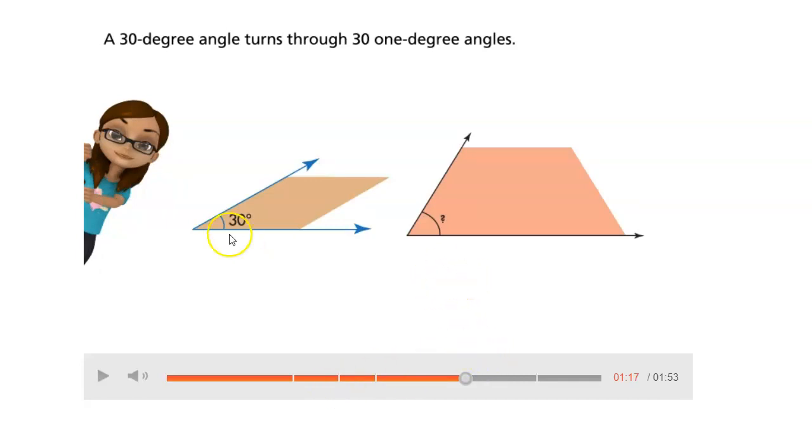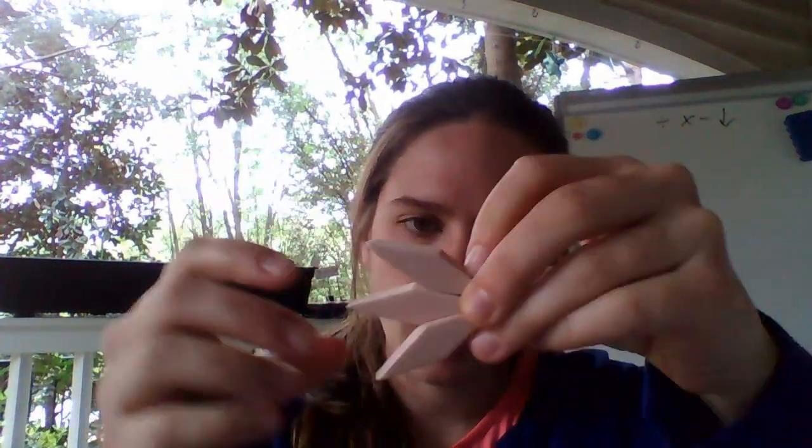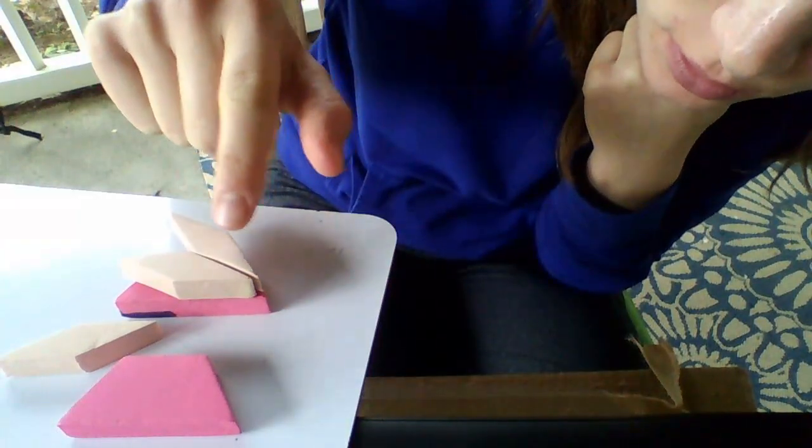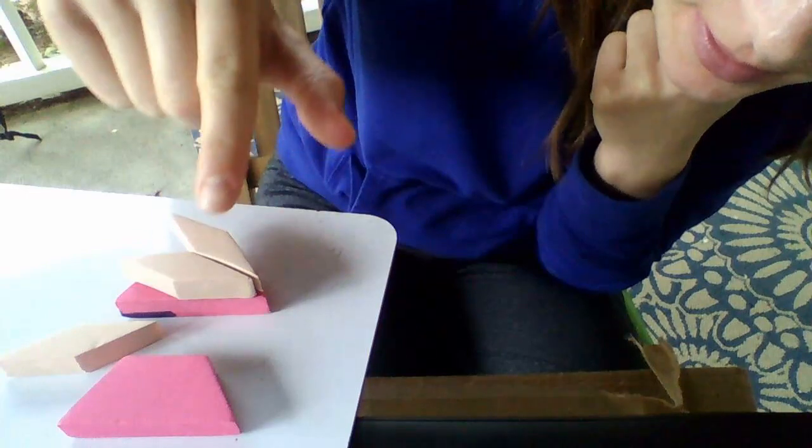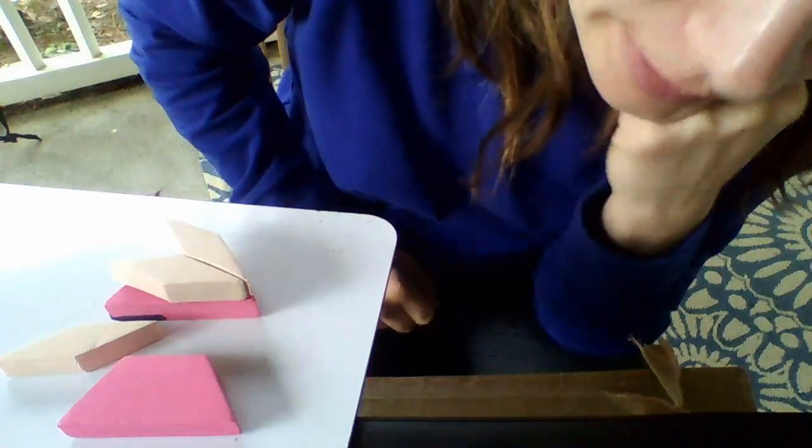Going back to our original problem, we're trying to find this mystery angle. Just how we use these pattern blocks to find the angle of this acute angle by finding how many makes a right angle, we're going to use these to find out how many of these acute angles does it take to make this angle. As you can see, two of these diamond shaped trapezoids makes one of these acute angles in the red trapezoid.